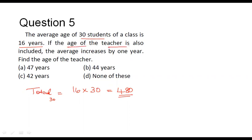Now to this you are including the age of the teacher also. Let us assume the age of the teacher is equal to T. So the total age of all these 31 people corresponds to 480 plus T.